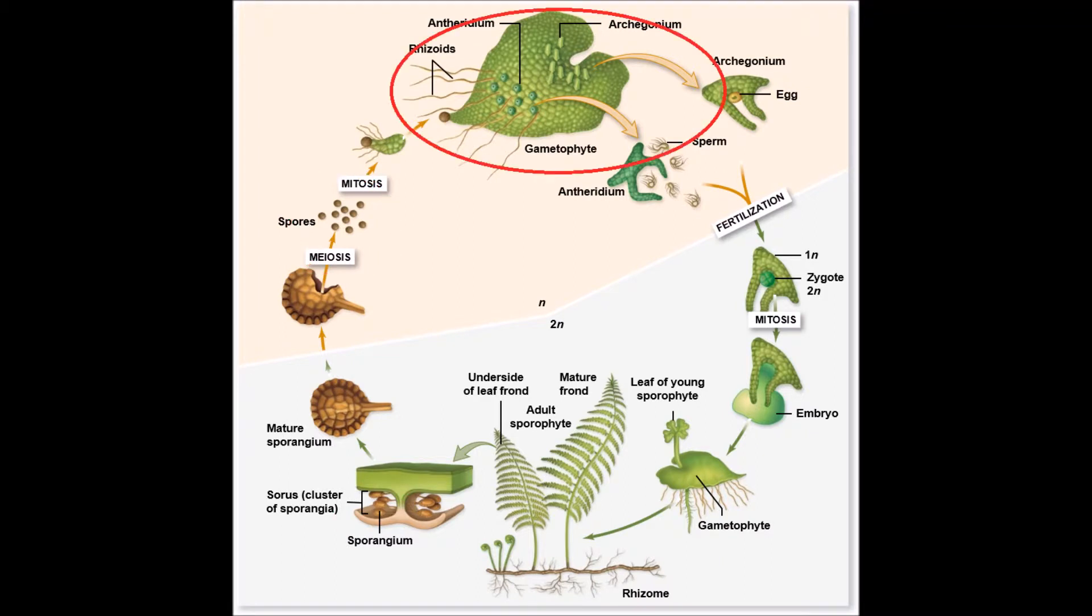When under the right circumstances, these spores will eventually grow into a mature gametophyte, which is haploid, meaning it only has one set of chromosomes.